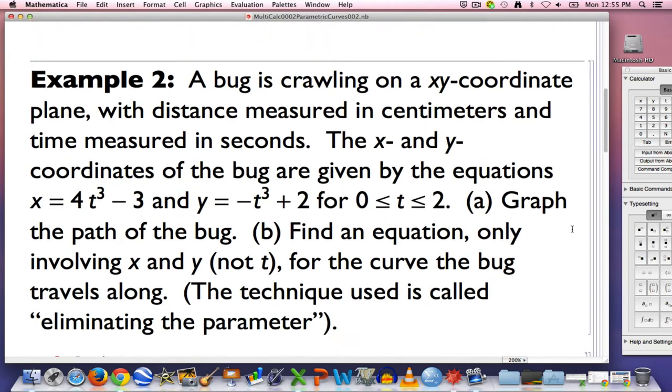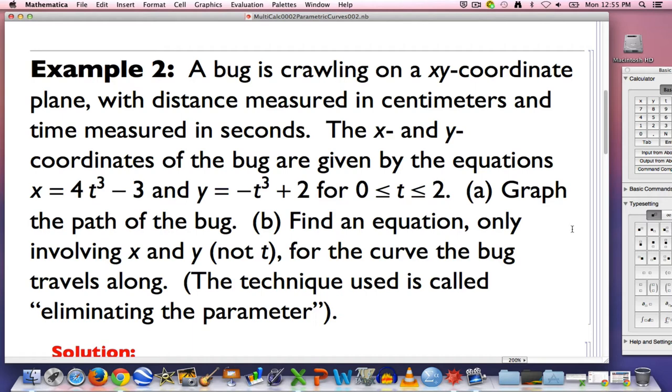So here's our example for this video. It's really just an extension of the example from the last video. A bug is crawling in a plane. We've got distance measured in centimeters and time measured in seconds, and we've got what are called a system of parametric equations that define the motion of the bug. I've picked these particular equations over this particular time interval. I want to graph the path of the bug and find an equation only involving x and y, not t, for the curve the bug travels along. Now, t, time, is called the parameter for these parametric equations. In part B, I want to eliminate the parameter.